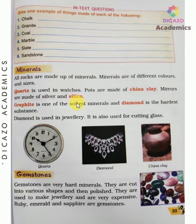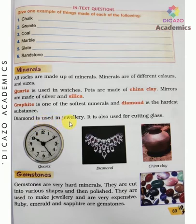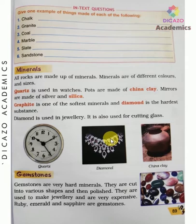Graphite is one of the softest minerals — the pencil lead is made from it. Diamond is the hardest substance. Diamond is used in jewelry, and it is also used for cutting glass because it is so strong.